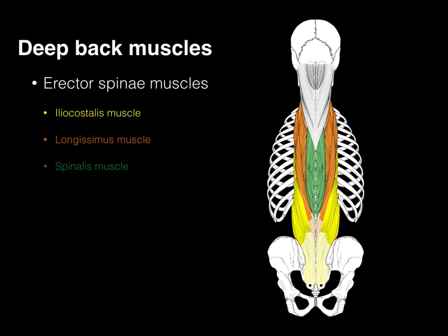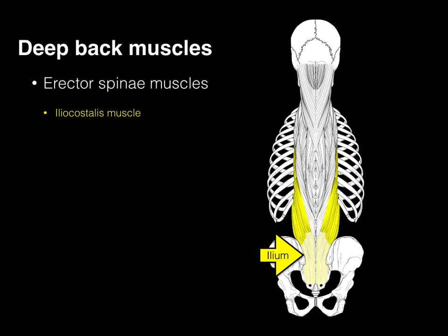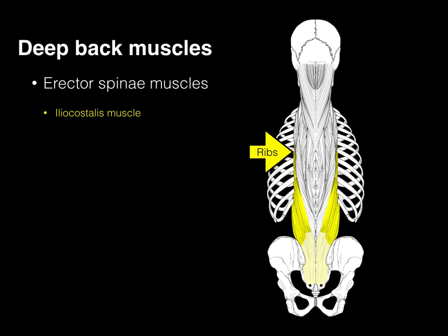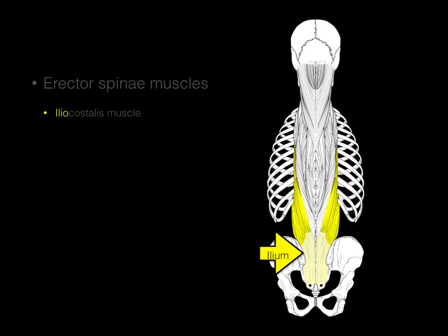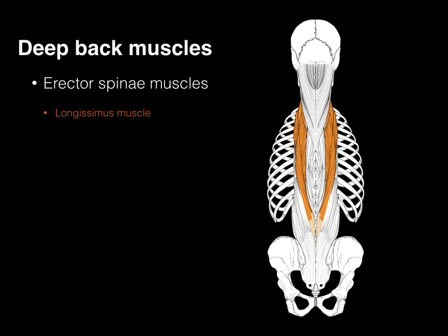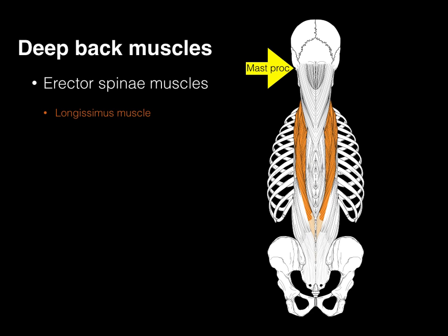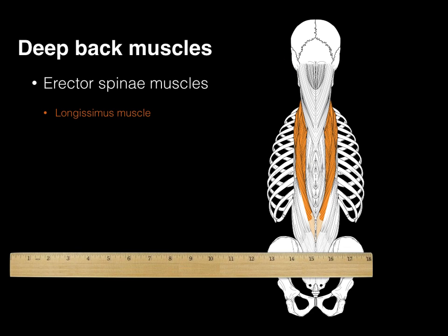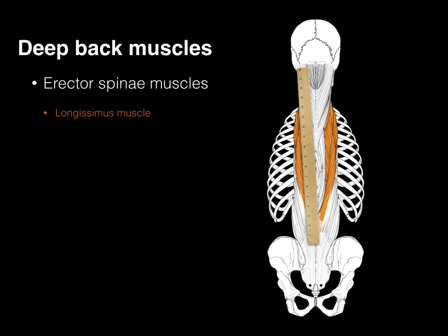The next group is the erector spinae muscles: iliocostalis, longissimus, and spinalis. The iliocostalis arises from the ilium and sacrum and ascends to attach segmentally along the ribs, hence the name ileo for ilium and costalis for ribs. The longissimus attaches to the vertebrae along the lower back and ribs all the way up to the mastoid process of the temporal bone — of all the erector spinae muscles, this one is the longest, going from the lumbar vertebrae to the skull.